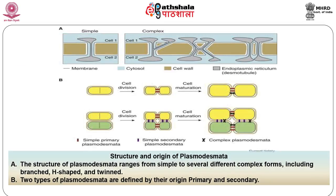Regarding the structure and origin of plasmodesmata: the structure of plasmodesmata ranges from simple to several different complex forms, including branched, H-shaped, and twin forms. Figure B shows that two types of plasmodesmata are defined by their origin — primary and secondary.